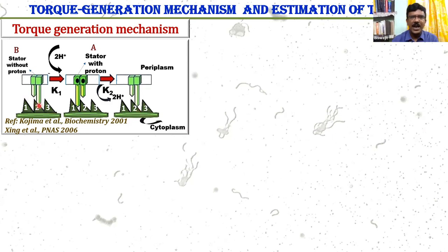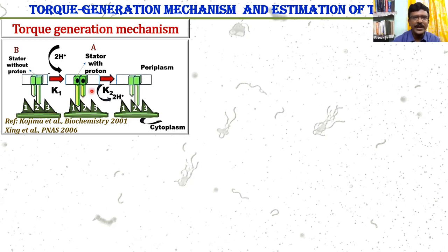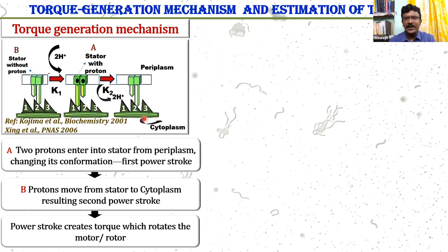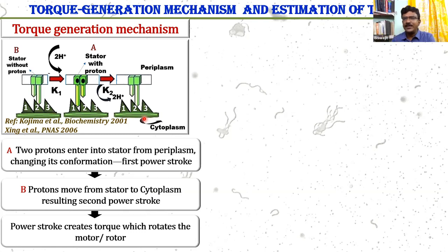The stator remains in two conformations: without proton and with proton. We represent this protein as two pistons. In the 'with proton' conformation, the right piston contacts the FliGC protein and makes a power stroke. Then when the proton goes from the stator to the cytoplasm, another conformation occurs and the left piston comes. This model was proposed by Kojima et al. and nicely elaborated by Zieg et al. These two power strokes create the torque and help rotate the motor.